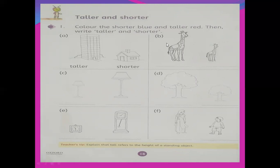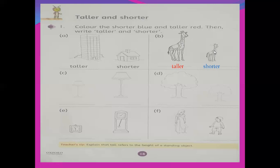Part B — look, these are two pictures. This one — is this shorter or taller? Of course this is taller. First you write 'taller'. I wrote with the red color — it means you color this picture red. And the second one is shorter — it means you color this one blue.